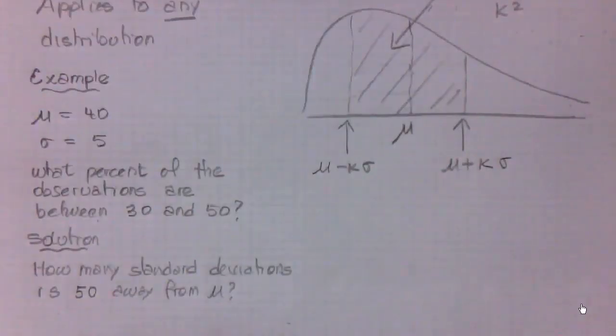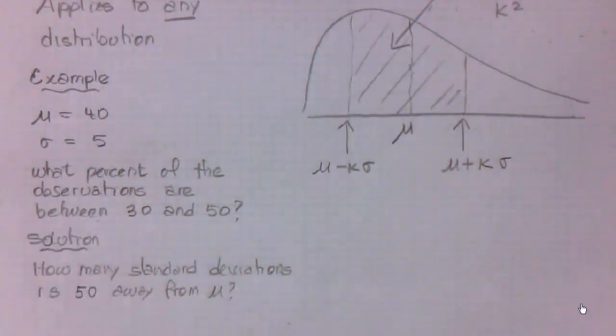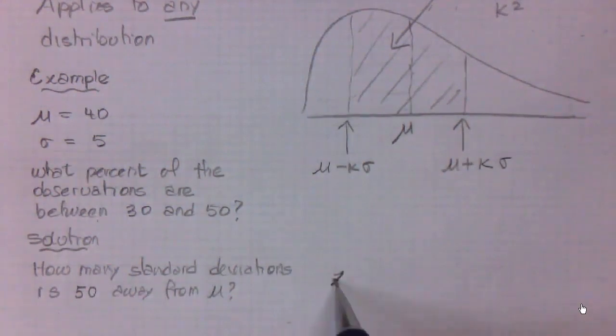Now, how many standard deviations is 50 away from the mean, which is 40? The answer to that question is the z-score, which is x minus μ over σ.